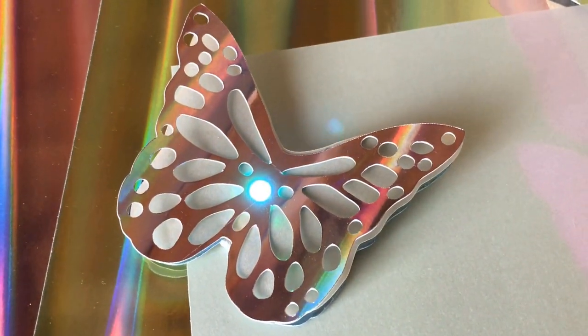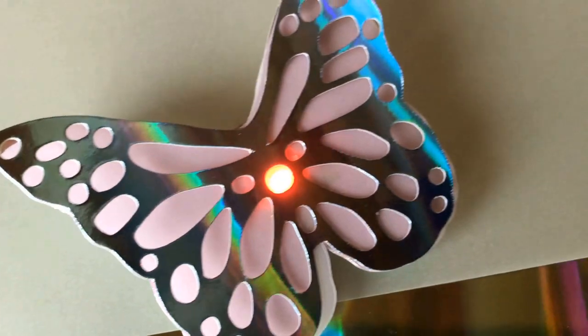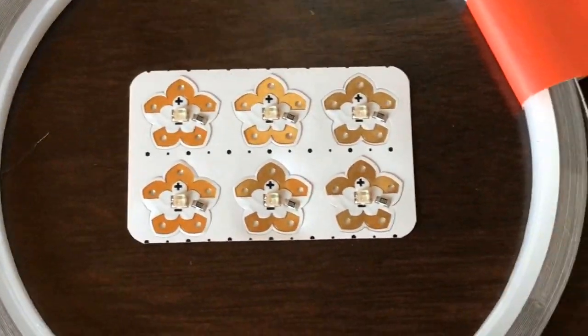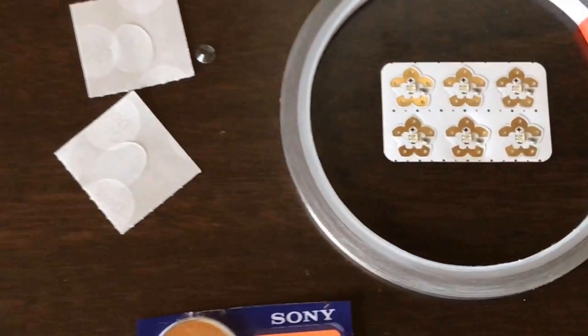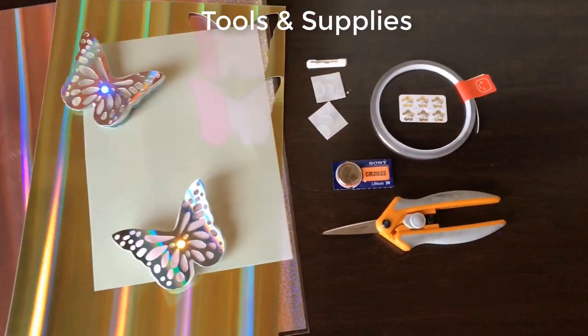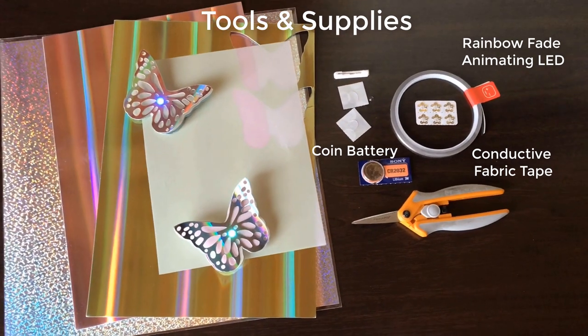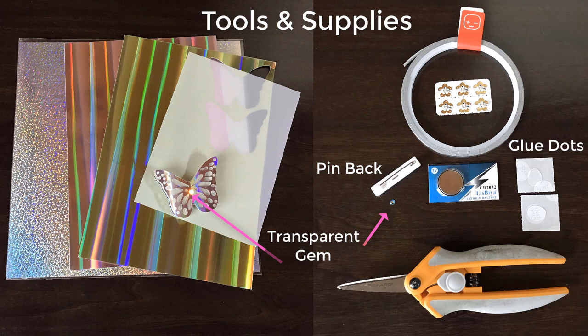To get started, you'll need a variety of decorative papers to make your butterfly layers and a few other supplies, including a Rainbow Fade Animating LED, conductive fabric tape, and a coin cell battery. You'll also need a pin back, glue dots, a transparent gem, and scissors.